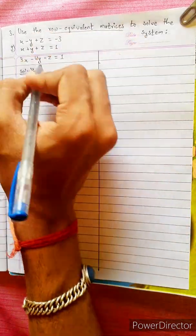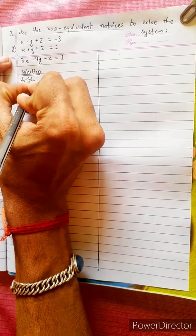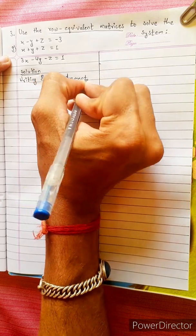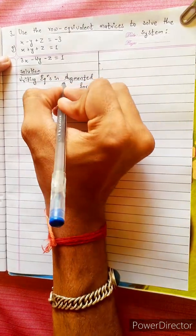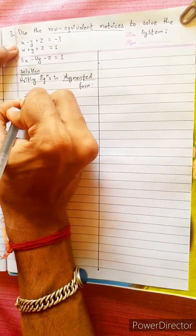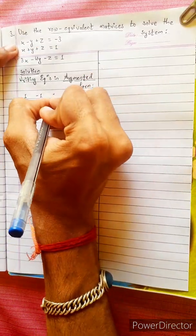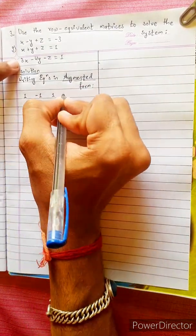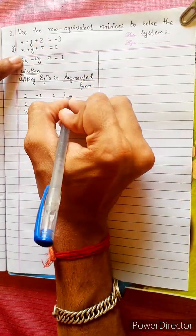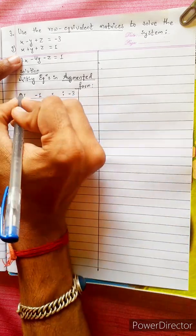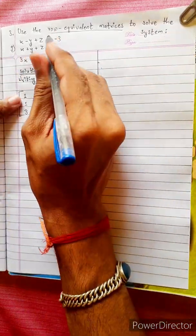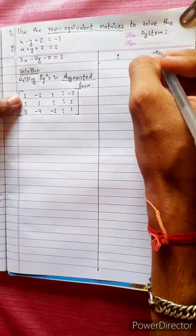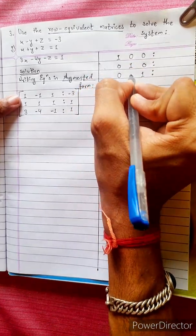Use the Row Equivalent Matrices. Let's write the equation at the beginning, writing the given equations in the augmented form. Let's write: 1, -1, 1, -1; then 3, -4, -1; then 1, -3, -1. Let's write the standard form — make the main diagonal 1 and the rest 0.